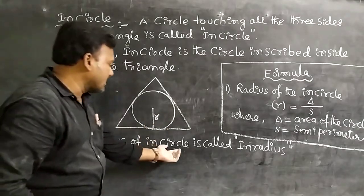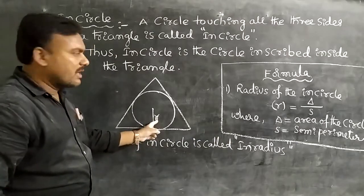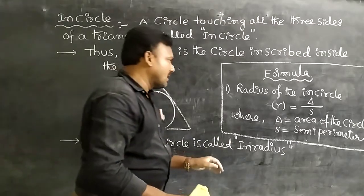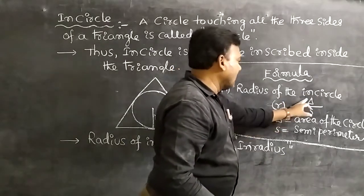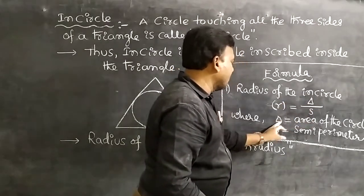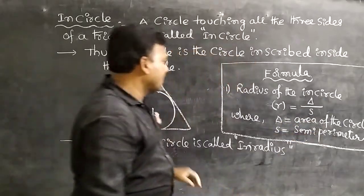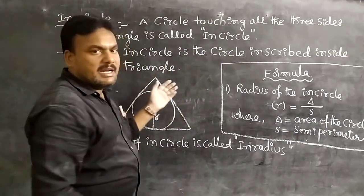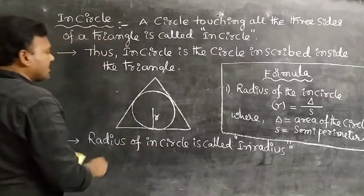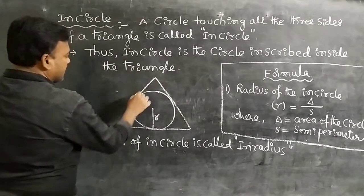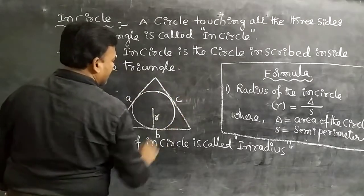The radius of the incircle is called the inradius, denoted by small r. The formula for the inradius is: r = Δ/s, where Δ is the area of the triangle and s is the semi-perimeter. This is for a scalene triangle, where the sides have lengths a, b, and c.